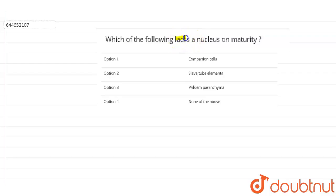Which of the following lacks a nucleus on maturity? The options given are: first is companion cells, second is sieve tube elements, third is phloem parenchyma, and fourth is none of the above.